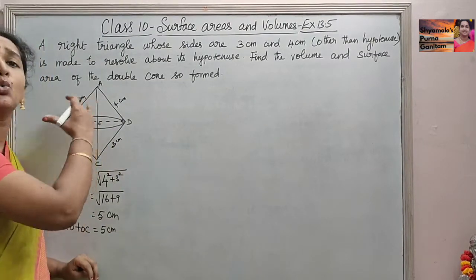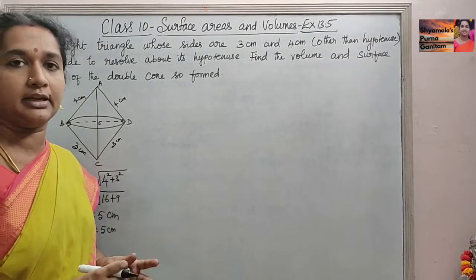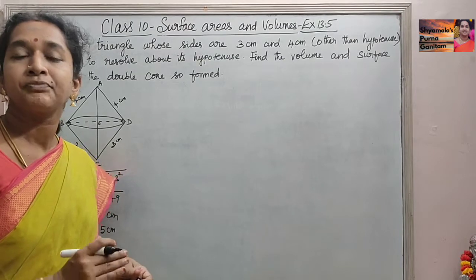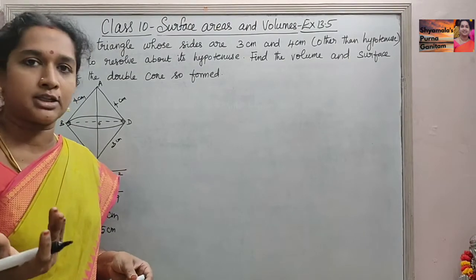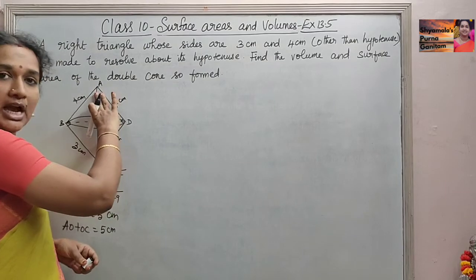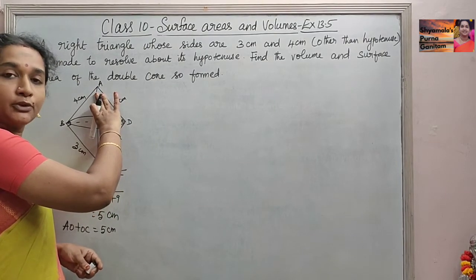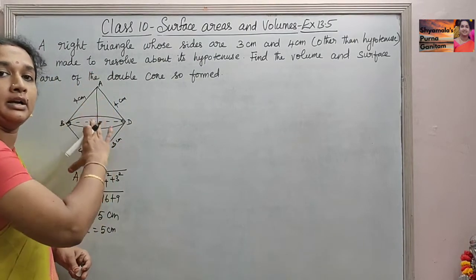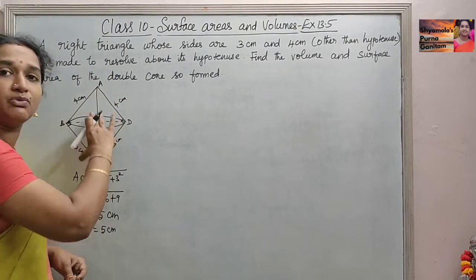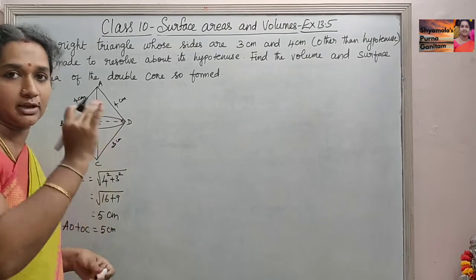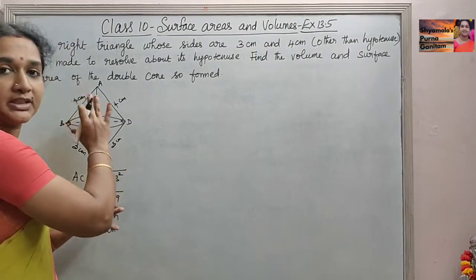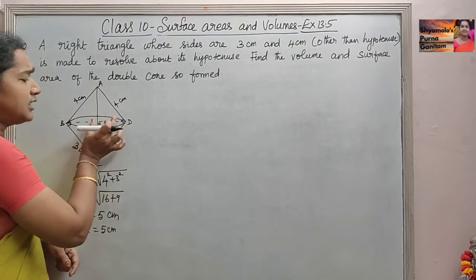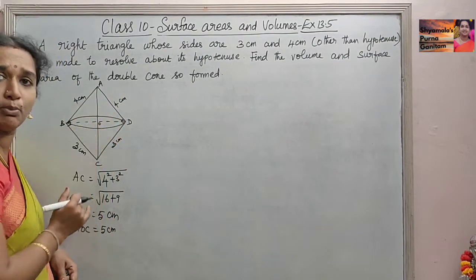We need to find the volume of the two cones separately. The formula for volume of a cone is (1/3)πr²h. The total height is 5 cm, which we know. Now we need to find the radius.